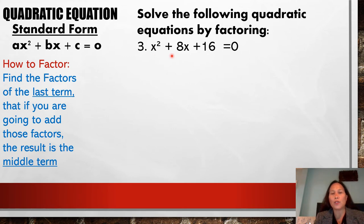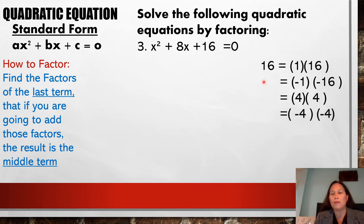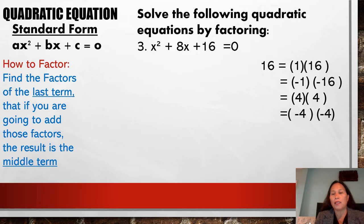Another one: x squared plus 8x plus 16 is equal to 0. What are the factor combinations of positive 16? We have 1 times 16, negative 1 times negative 16 — still positive 16 since multiplying two negatives gives a positive. Also 4 times 4 is 16, and negative 4 times negative 4 is 16. Once you find the pair you need, you can stop. I already know that adding 4 and 4 gives 8, which matches the middle term.